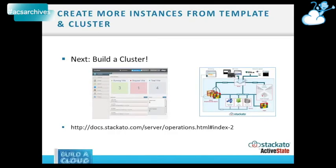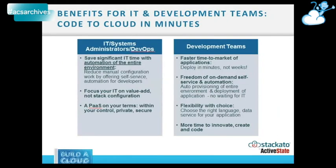The next step you would take is to build out a cluster. You take that template created in the first stage and become a cloud controller with a health manager and router running on it, then reconfigure the year paths to optimize for the types of applications you want to run. All of this information is on the VMs under documentation, or at docs-staccato.com. Documentation is kept up to date for all new releases, and there will be a whole section on CloudStack shortly.